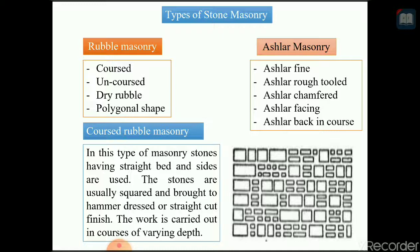The first part of rubble masonry is coarse rubble masonry, the second is uncoarse rubble masonry, the third is dry rubble masonry, and the fourth is polygonal shape rubble masonry. Ashlar masonry is divided into five parts: ashlar fine, ashlar rough tooled, ashlar chamfered, ashlar facing, and ashlar back in a course.